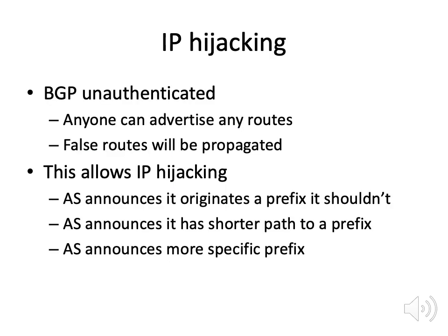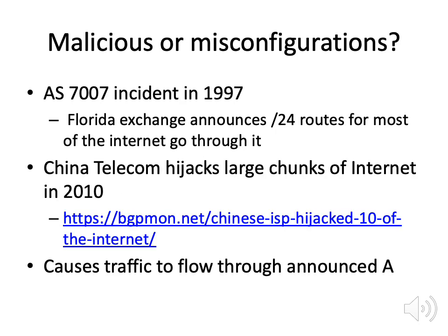So what can go wrong? One attack is IP hijacking. BGP classically is not authenticated, so anybody can send a false route announcement, and because BGP spreads information around, that false route will be propagated everywhere. An autonomous system might falsely announce it can take traffic to a prefix it doesn't own, or announce a shorter path — one hop instead of five — or announce a more specific prefix, which routers will prefer. This happened in 1997 in the AS7007 incident, when a Florida exchange announced very specific slash 24 routes for most of the internet, causing most routers to send traffic there. The exchange dropped it all, and the internet essentially went down.